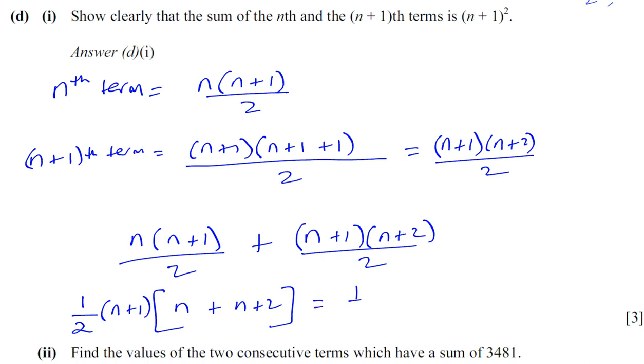Now, you've got a half times n+1 times, you've got 2n+2. 2 is a common factor in this bracket. I can take that out. I'll take out the 2. So, I've got 2 over 2 times n+1 times n+1. Because if I take 2 out of this bracket, I'm left with n+1 inside the bracket. That 2 cancels with the 2, and you're left with n+1 times n+1, which is n+1 squared, as required.